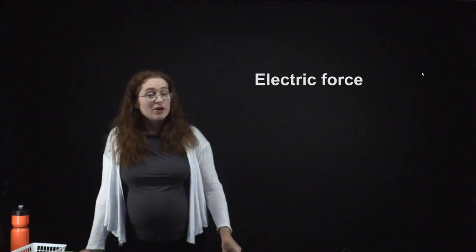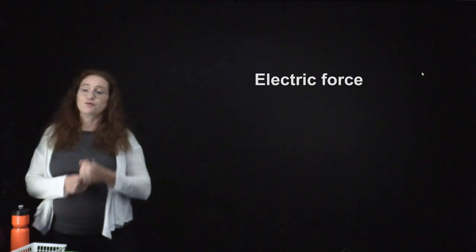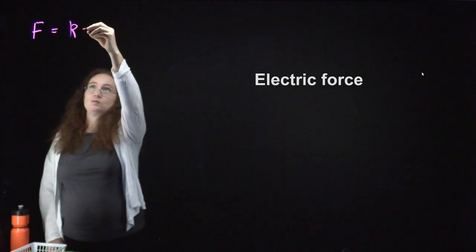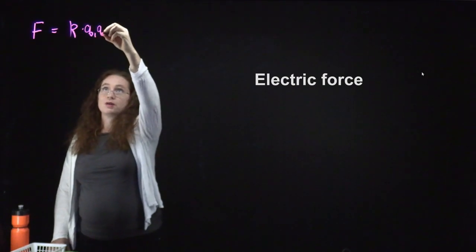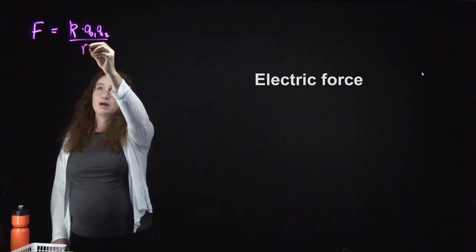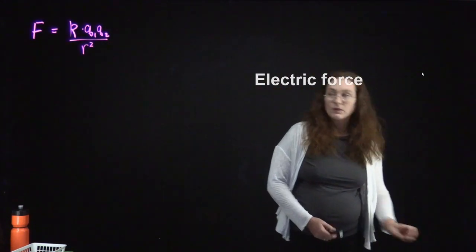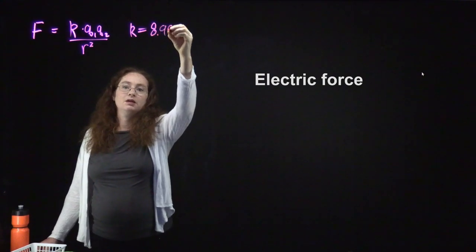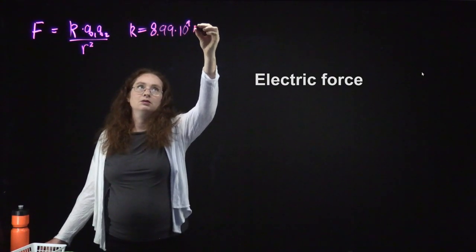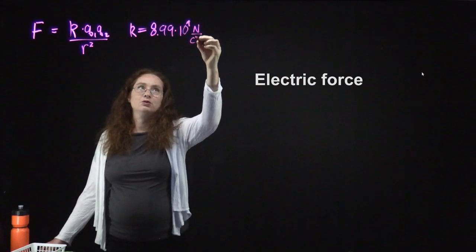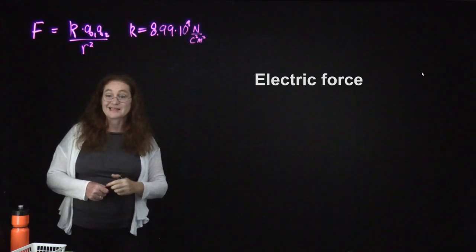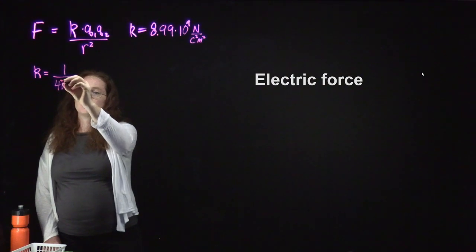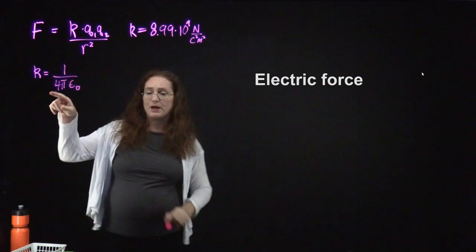When we have two objects with charges, there is an attractive or repulsive force between them. The magnitude is given by Coulomb's Law: the Coulomb constant k times the product of the two charges Q1 and Q2, divided by the distance between them squared. The Coulomb constant is 8.99 × 10⁹ N·m²/C², which gives us SI units. We also sometimes use the relation that k equals 1 over 4π times epsilon naught, the permittivity of free space.